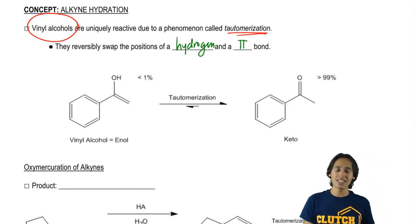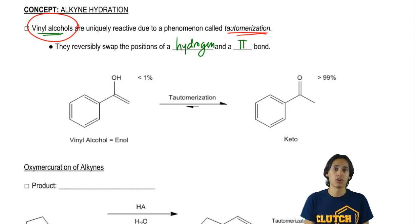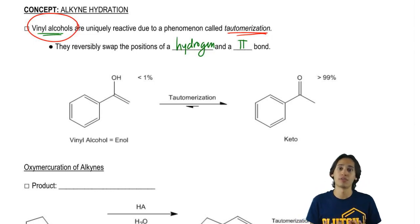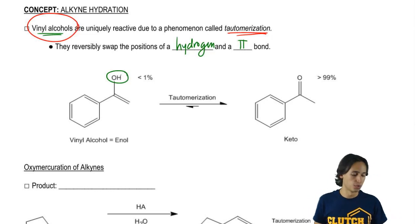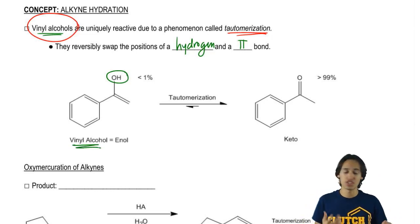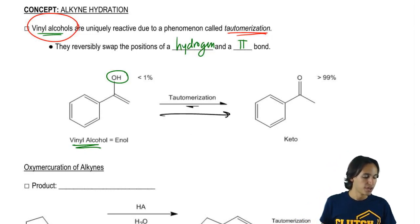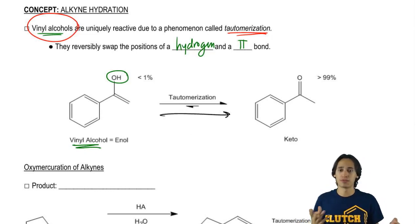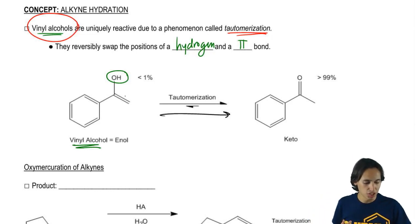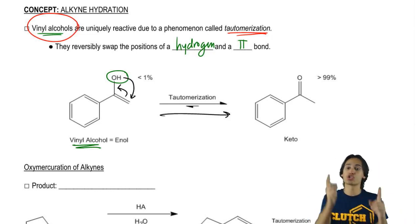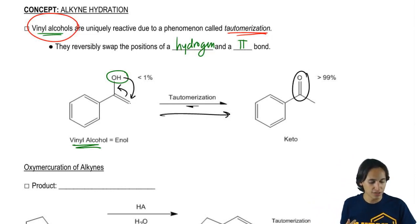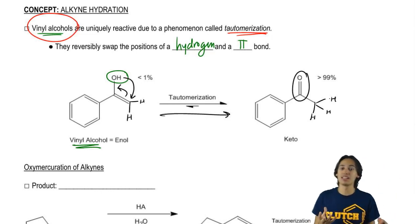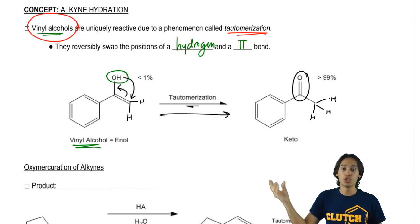Any time that you make a vinyl alcohol, this is something special — this is not a regular alcohol. This is an alcohol subject to tautomerization. Here's an alcohol directly attached to a double bond — a vinyl alcohol. Through the tautomerization process, this turns into a completely different functional group: my double bond moves over, my H moves down, they switch places. What winds up happening is that you get a carbonyl formed, and instead of a CH2, this turns into a CH3. So this turns from a vinyl alcohol into a ketone.